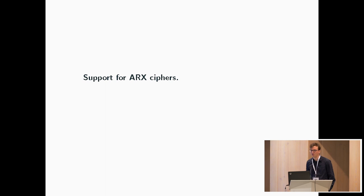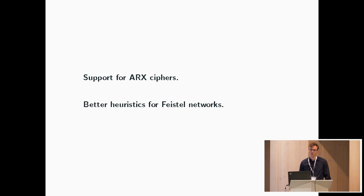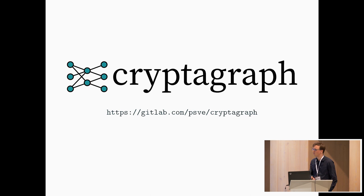For future work, we would like to add support for ARX ciphers — we need some good heuristics for ARX ciphers, as the current heuristics obviously don't port over and it's not immediately obvious how to do this. We would also like to have some better heuristics for Feistel networks; we do have support for Feistel networks but would like less generic heuristics.